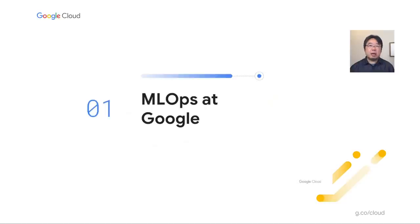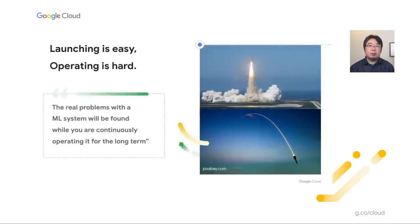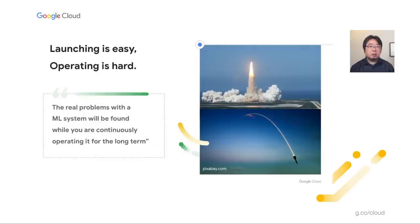So what is MLOps and how has Google been applying that? I started talking about MLOps back in 2018, where I heard this word from one of the long-time machine learning engineers at Google. He had been designing and operating one of the largest machine learning production systems for around 10 years. He said launching the machine learning system is kind of the easiest part. The hardest part is keeping that system operating for many years — like five or ten years. The real problems will be found while you are continuously operating it.